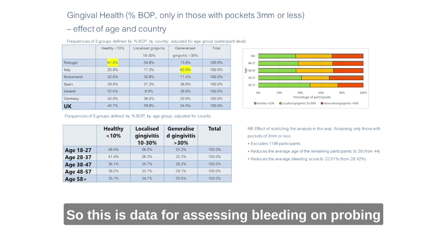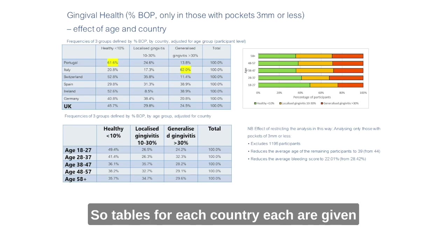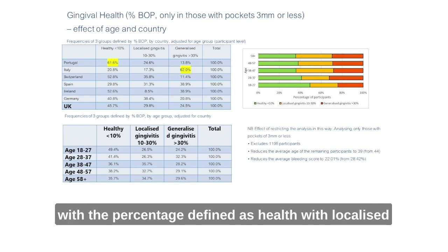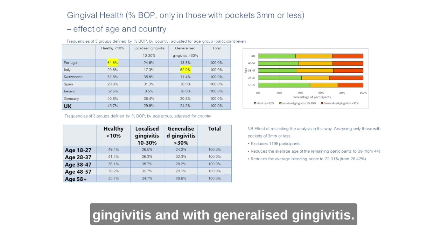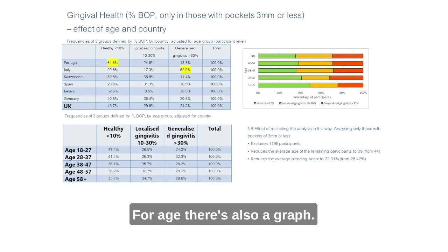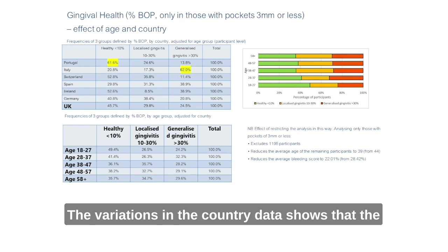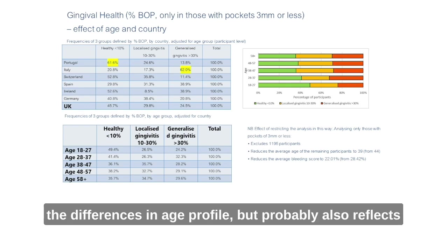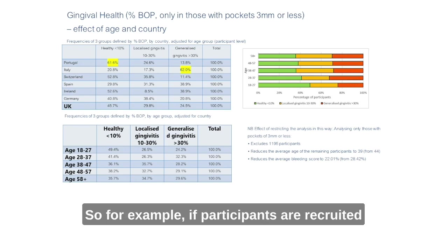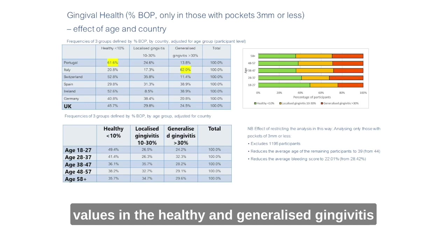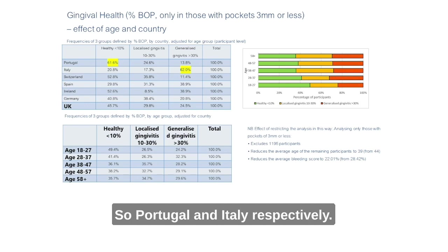This slide shows data assessing bleeding on probing in those with no pockets of four millimeters or more, broken down by country and age. Tables for each country show percentages defined as healthy, with localized gingivitis, and with generalized gingivitis. Variation across countries reflects not just differences in age profile but also differences in cohort sources — for example, whether participants were recruited from a periodontal clinic. The highest values in the healthy and generalized gingivitis groups are highlighted in yellow, corresponding to Portugal and Italy respectively.